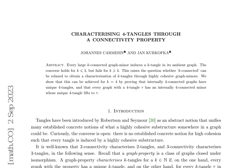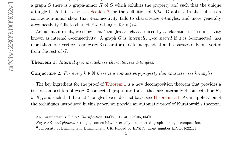This means that every internally four-connected graph has a unique four-tangle, and every graph with a four-tangle has an internally four-connected minor whose unique four-tangle lifts to the original four-tangle. The authors conjecture that for every k element of N, there exists a connectivity property that characterizes k-tangles.